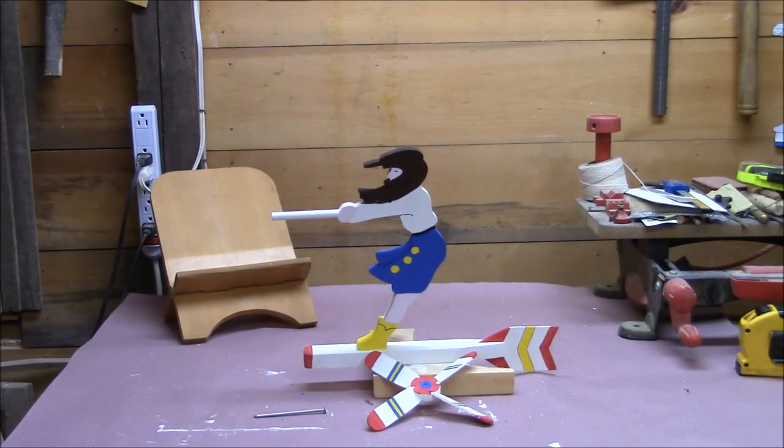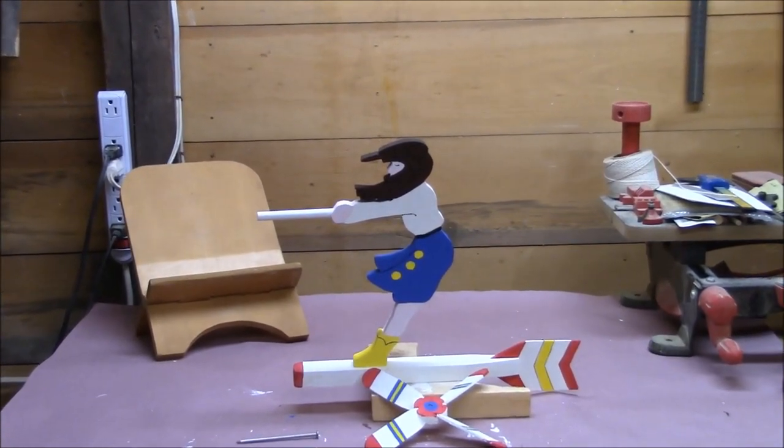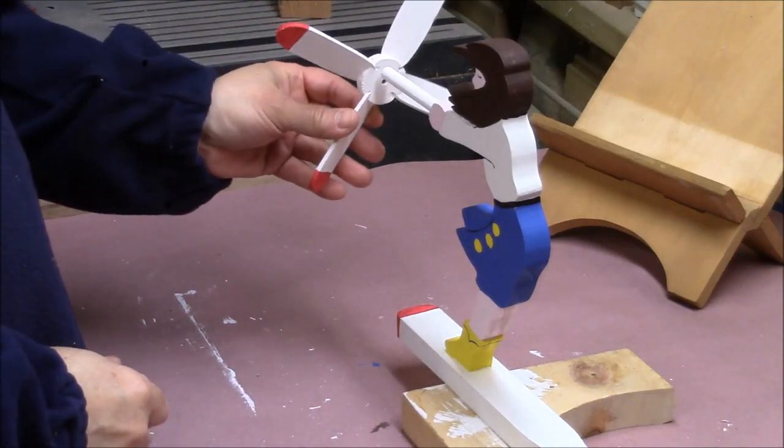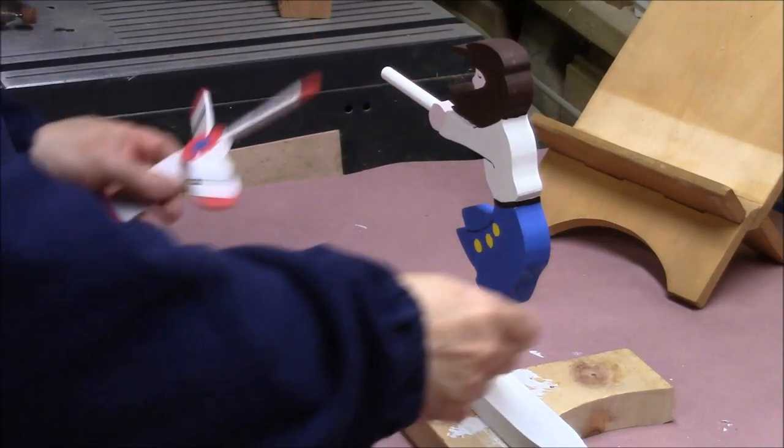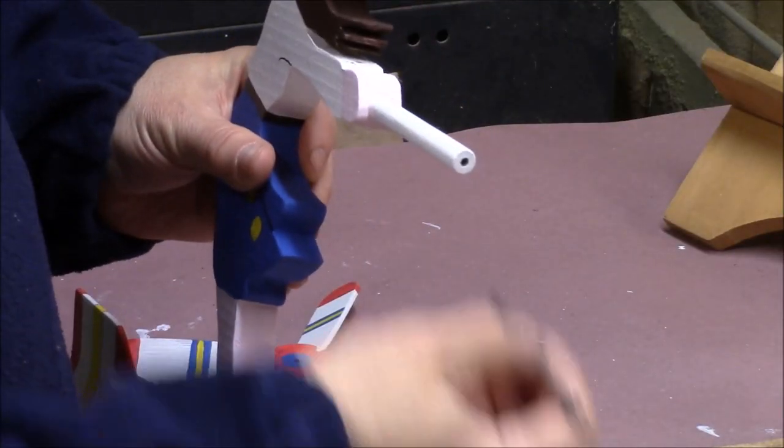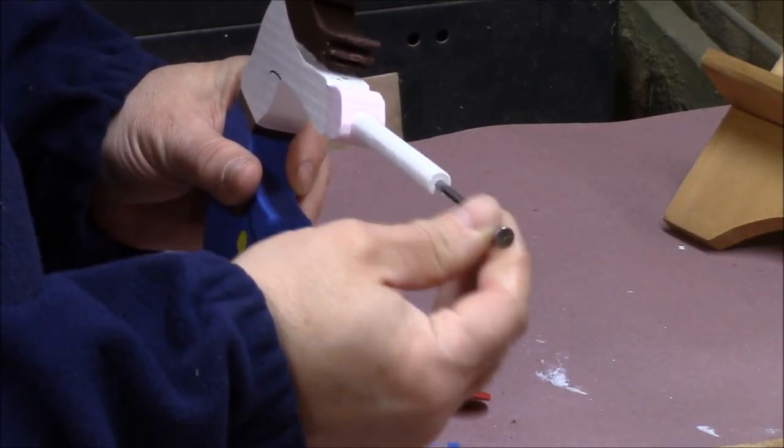Here she is, all painted. Now I need to attach the propeller to the end of this stick. I made the hole in the end of the stick just big enough to snugly accept this nail.